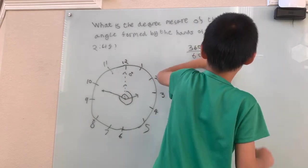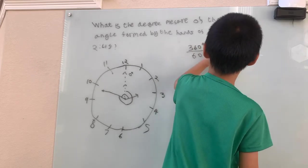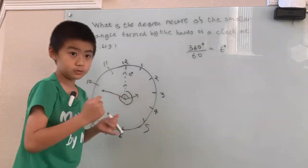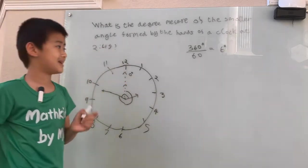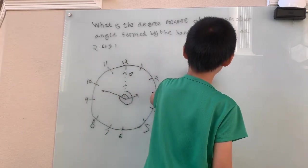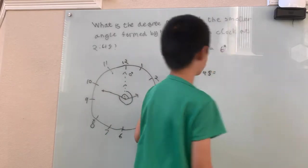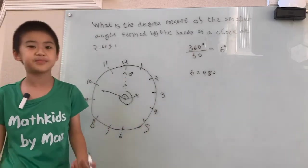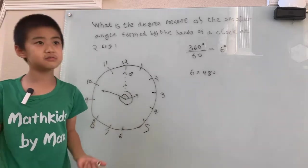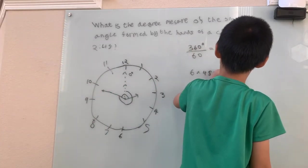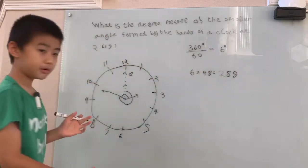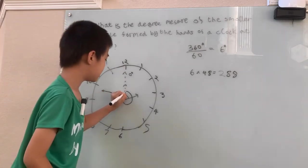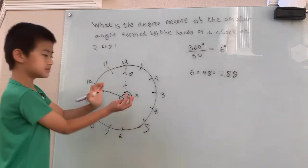We can divide by 60, and we get 6 degrees. So for every minute, the minute hand moves 6 degrees. It moves 48 minutes, that means it moves 6 times 48. Well, 6 times 40 is 240, we have to add on 6 times 8, so 240 plus 48 is 288.